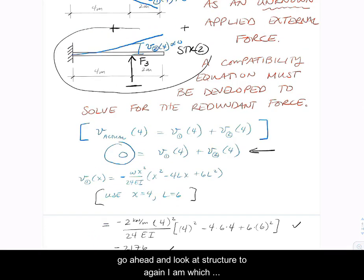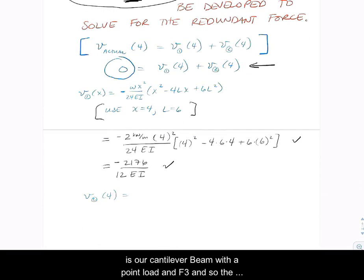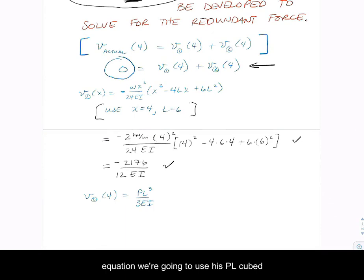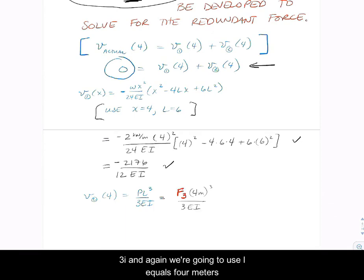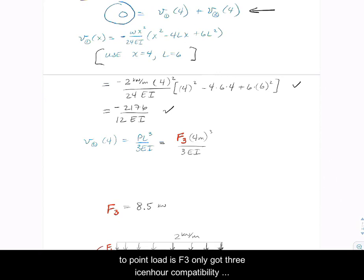We go ahead and look at structure two again, which is our cantilevered beam with a point load F3. And so the equation we're going to use is PL cubed over 3EI. And again we're going to use L equals four meters, the point load is F3, and we've got 3EI.